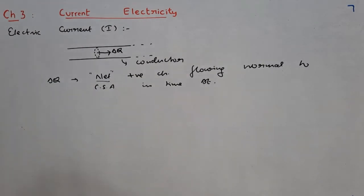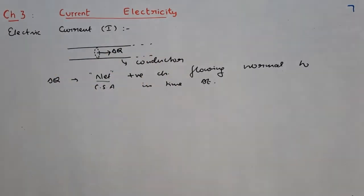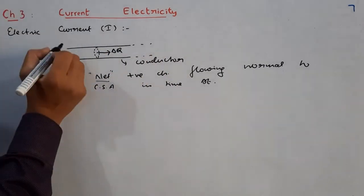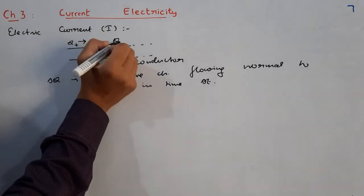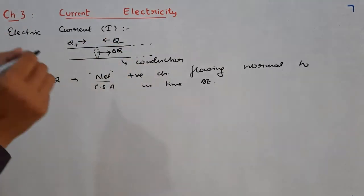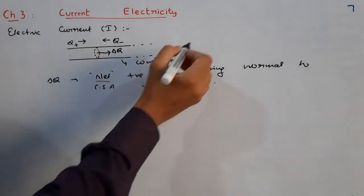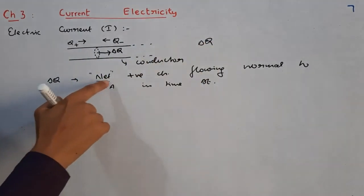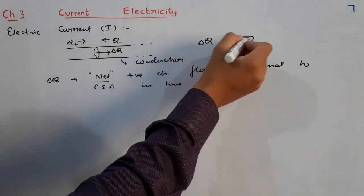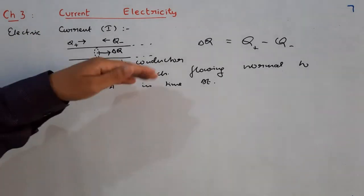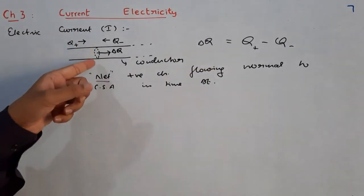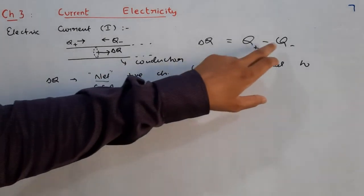There is every possibility that both kinds of charges, positive and negative, are present. Positive charges are flowing in this direction; negative charges are flowing in the opposite direction under the influence of some electric field. Suppose q plus is the positive charge flowing in this direction and q minus is the negative charge that flows in the opposite direction, and they cross this cross section in time delta t. Then delta q, as per our assumption the net positive charge flowing, will be q plus minus q minus. According to this figure, the net positive charge flowing towards right normally through this particular cross section will be delta q = q plus minus q minus.